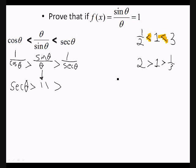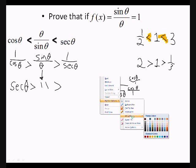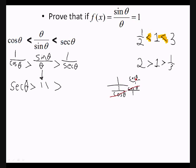1 over secant theta is the same thing as 1 over 1 over cosine theta. We can obviously take this and stick it in the numerator. Of course, the long logic of that is that we can multiply both the numerator and the denominator by the same thing, which would be cosine of theta. That would cancel out and all we're left with is cosine theta. We have cosine theta over on this side because 1 over secant theta is cosine theta.